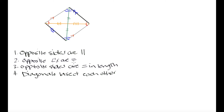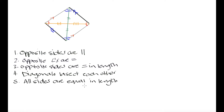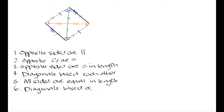In addition to parallelogram properties, the rhombus has special properties that differentiate it. The first special property is that all sides of the rhombus are equal in length — all four sides have the same length. The second special property is that the diagonals bisect each other at 90-degree angles, giving us four 90-degree angles at the intersection.